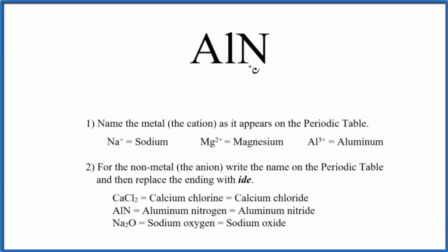To write the name for AlN, we first need to realize that we have an ionic compound here. That's because aluminum is a metal, nitrogen is a non-metal. When we have a metal and a non-metal, that's an ionic compound.